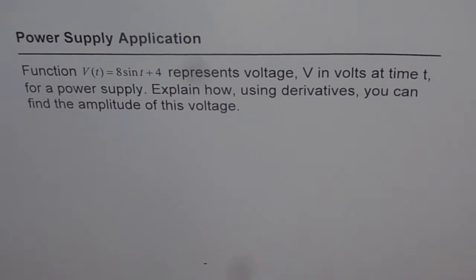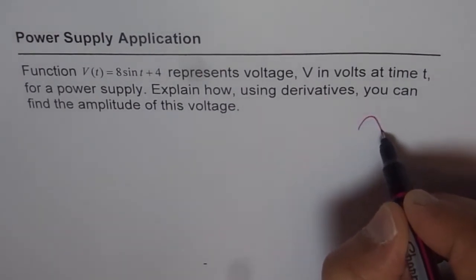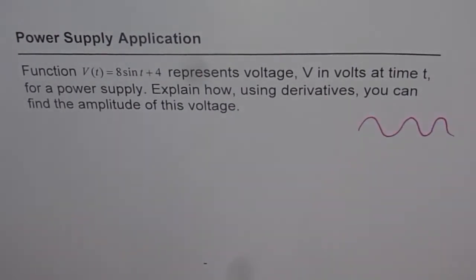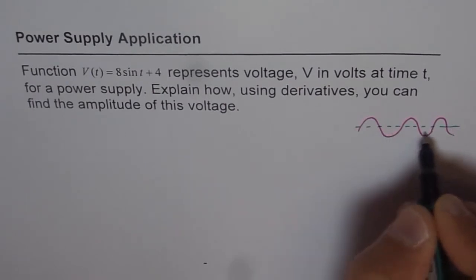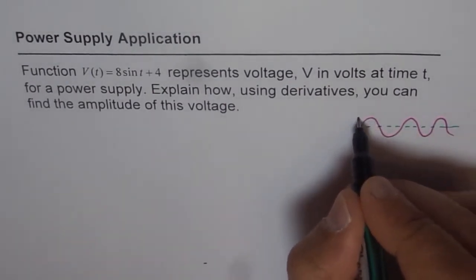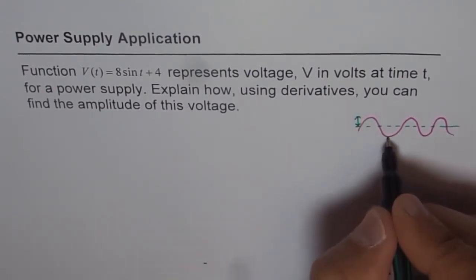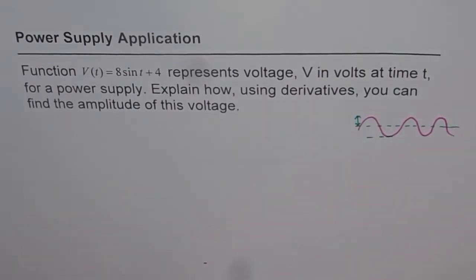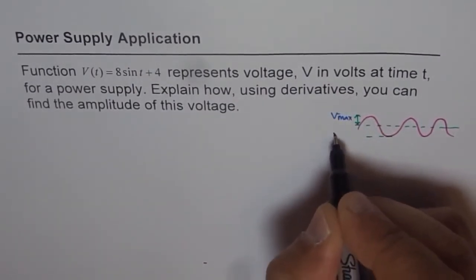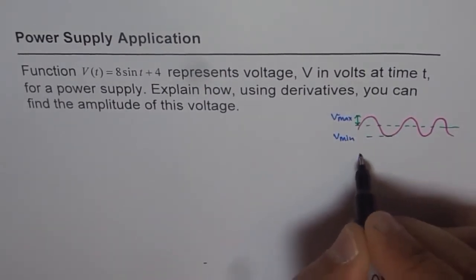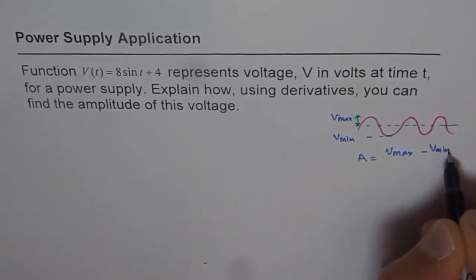Let's understand what amplitude is. For a sine wave, the line of symmetry is the axis, and amplitude is the maximum distance from that line of symmetry. You can also find amplitude using maximum and minimum voltage: amplitude equals V_max minus V_minimum, divided by 2.